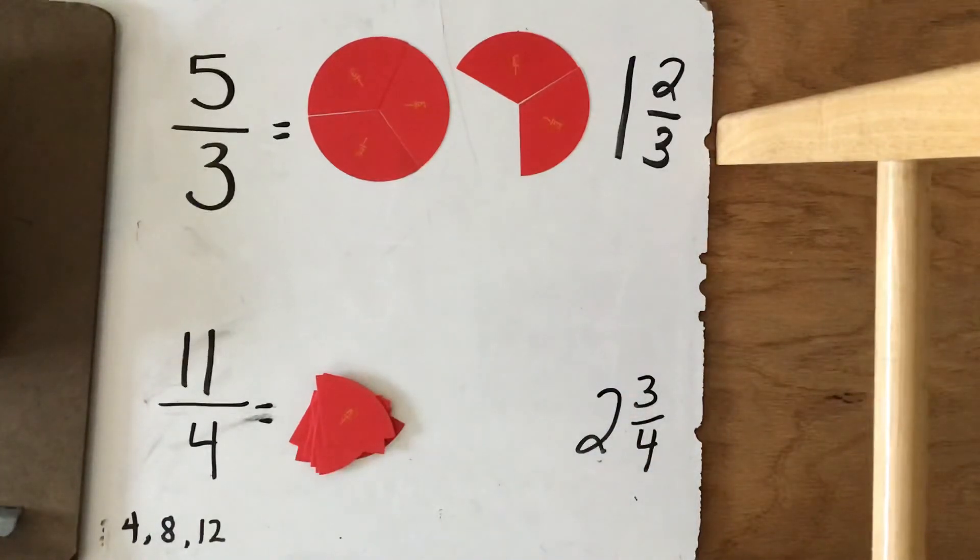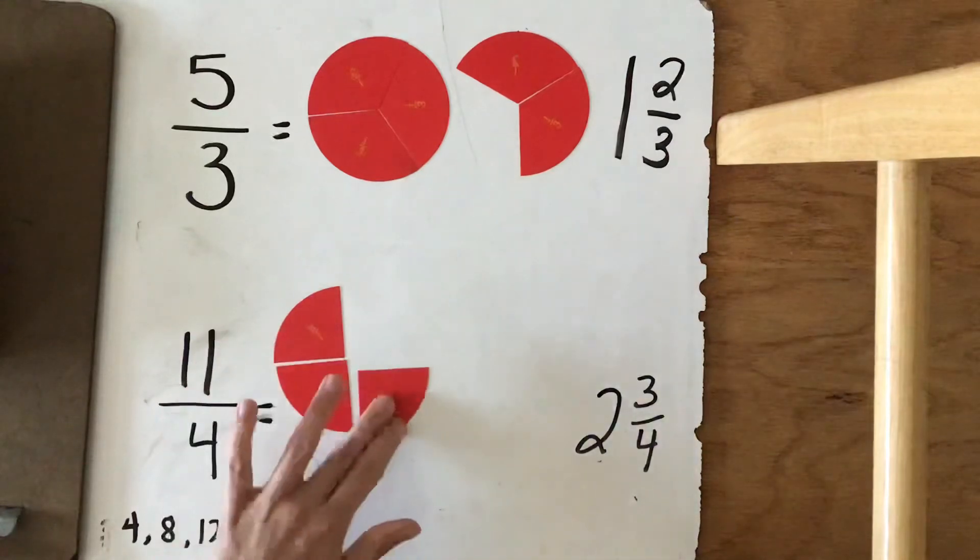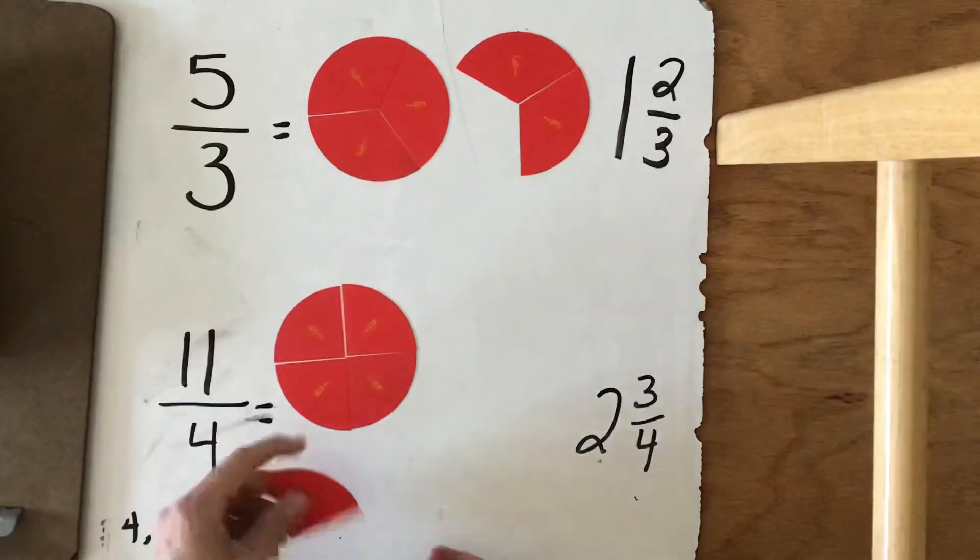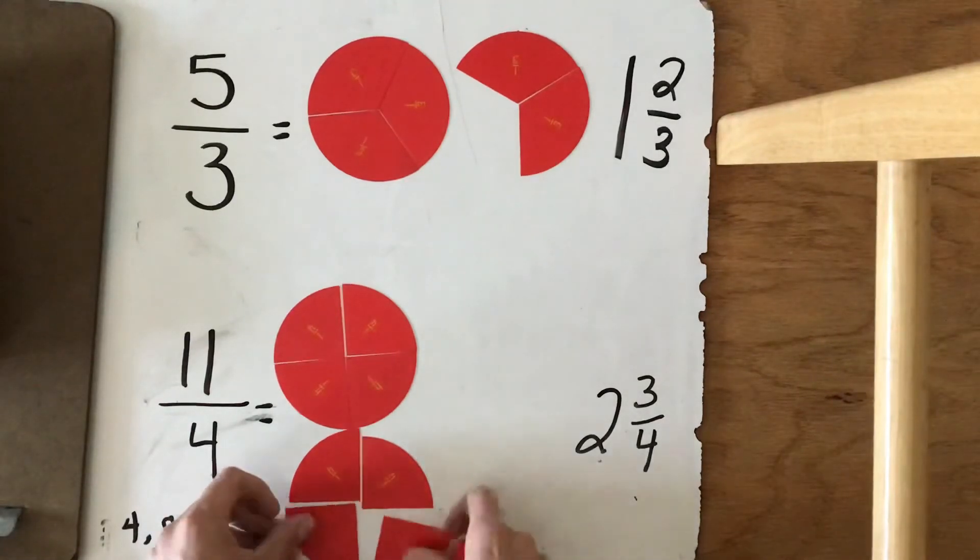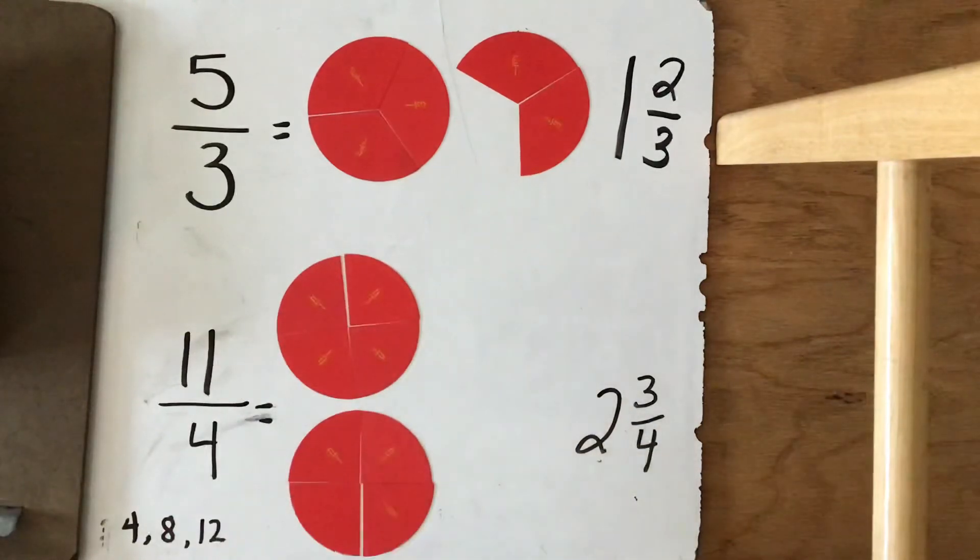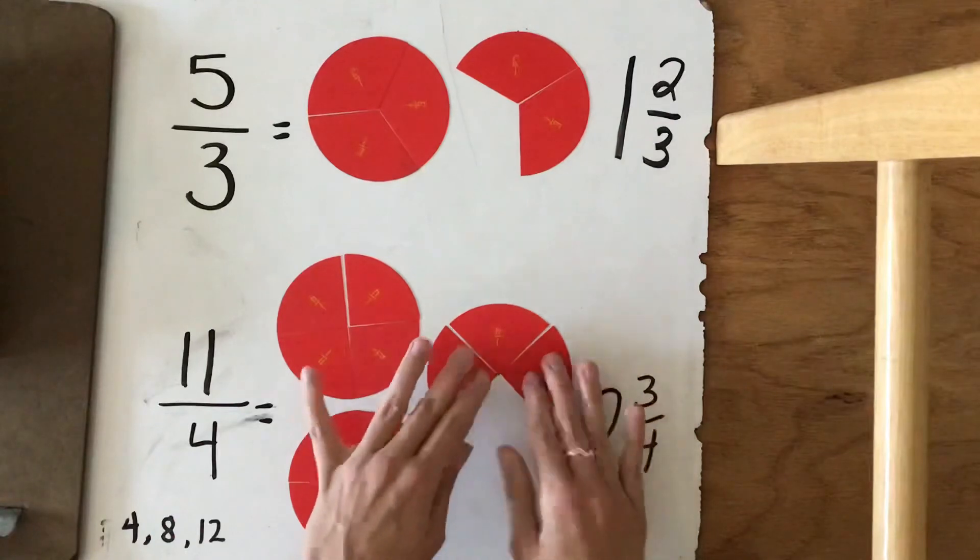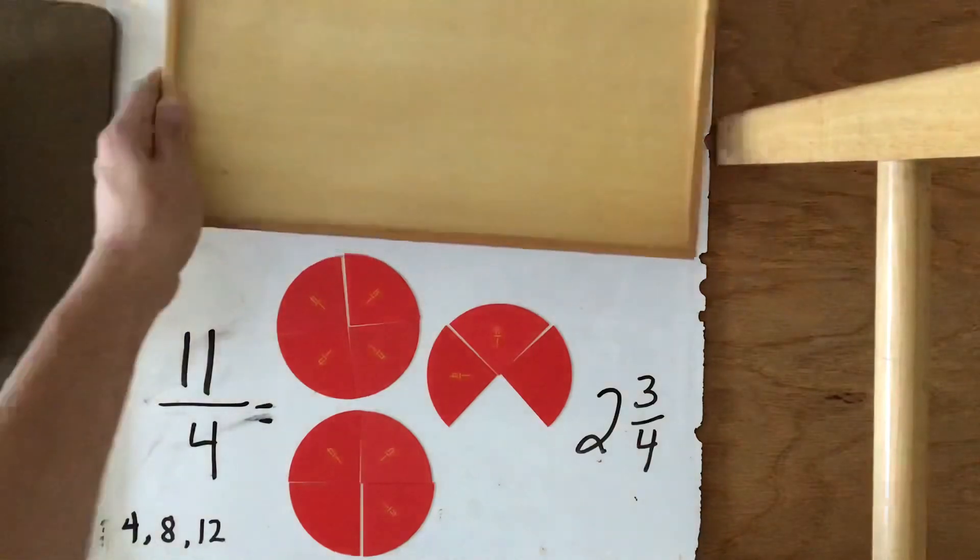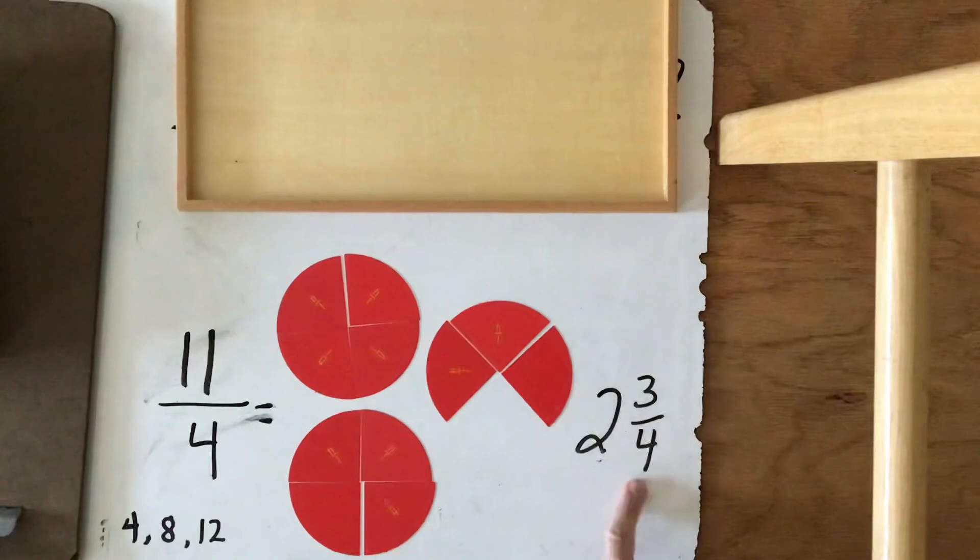Let's see if we're correct. There it is. We have 2 wholes and there's 3 fourths left over.